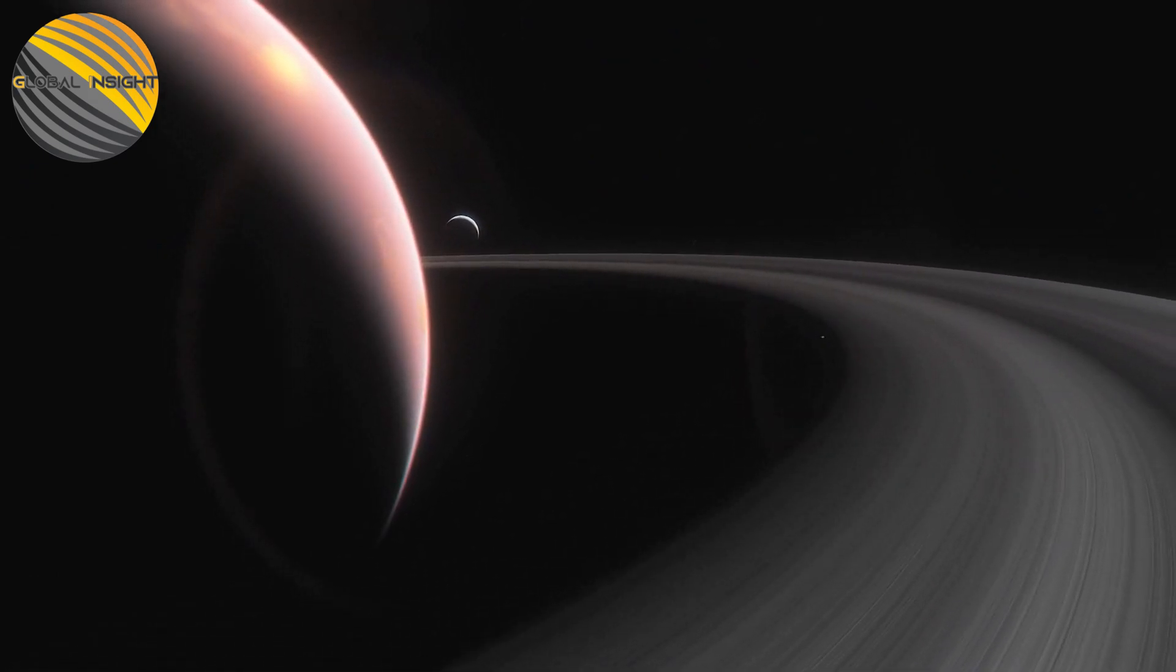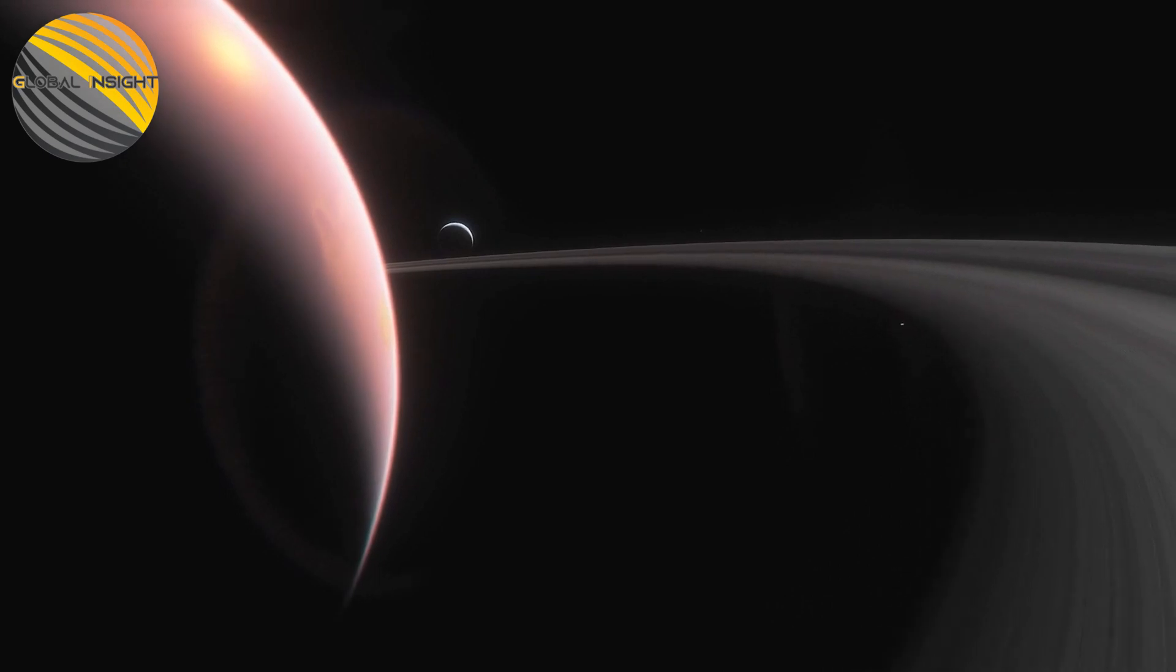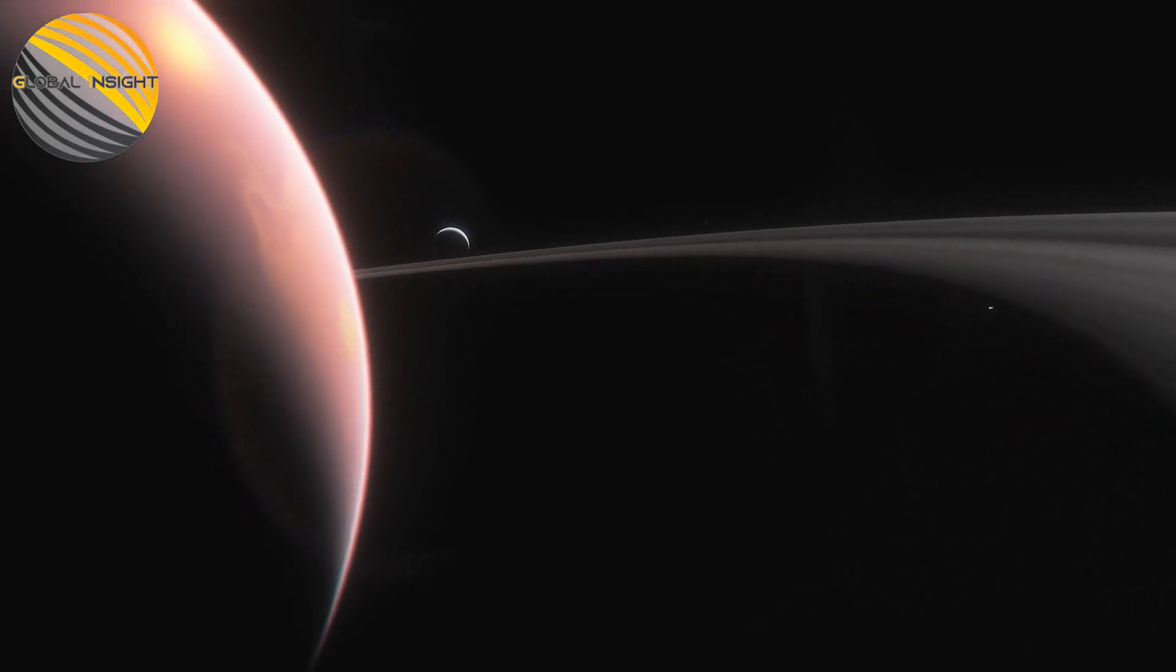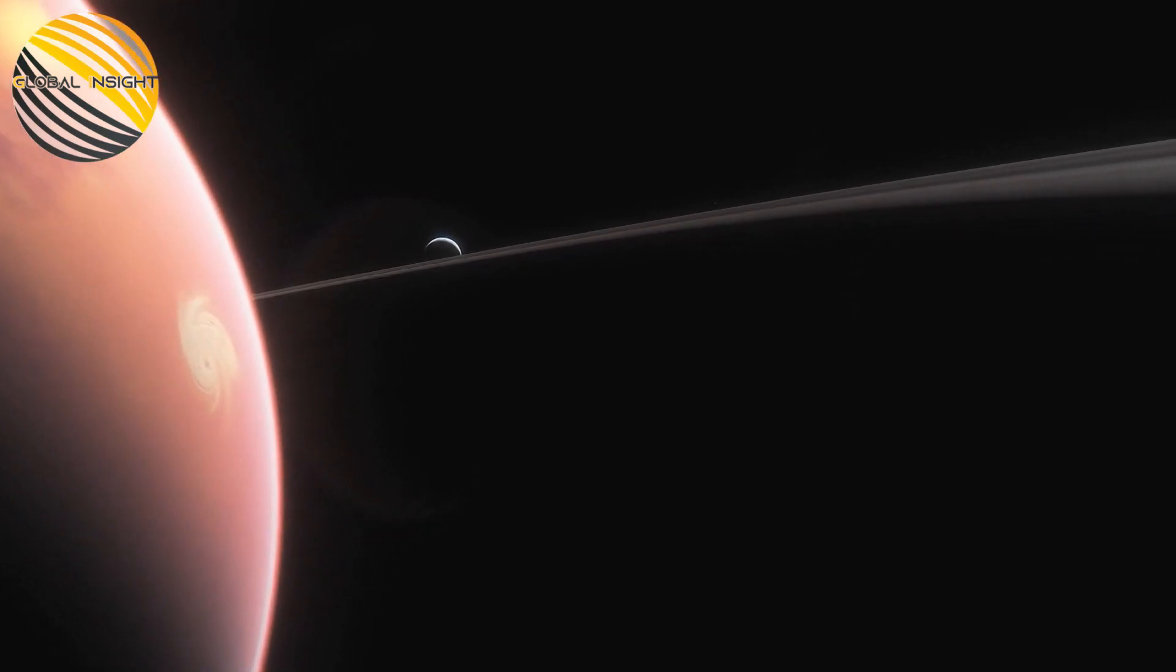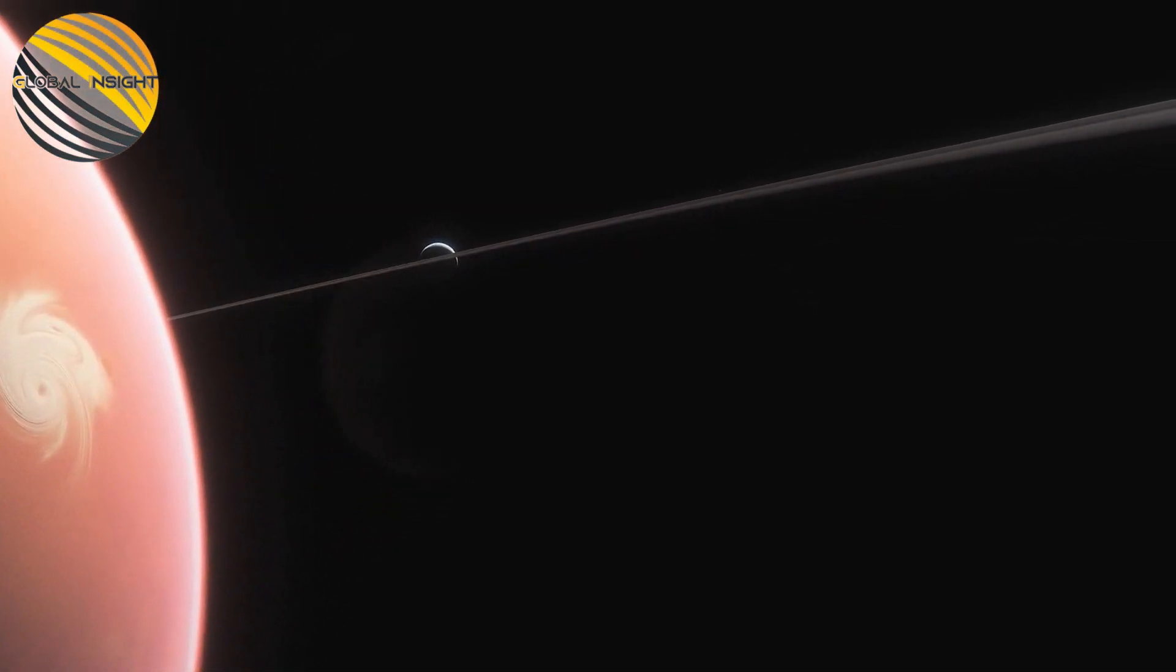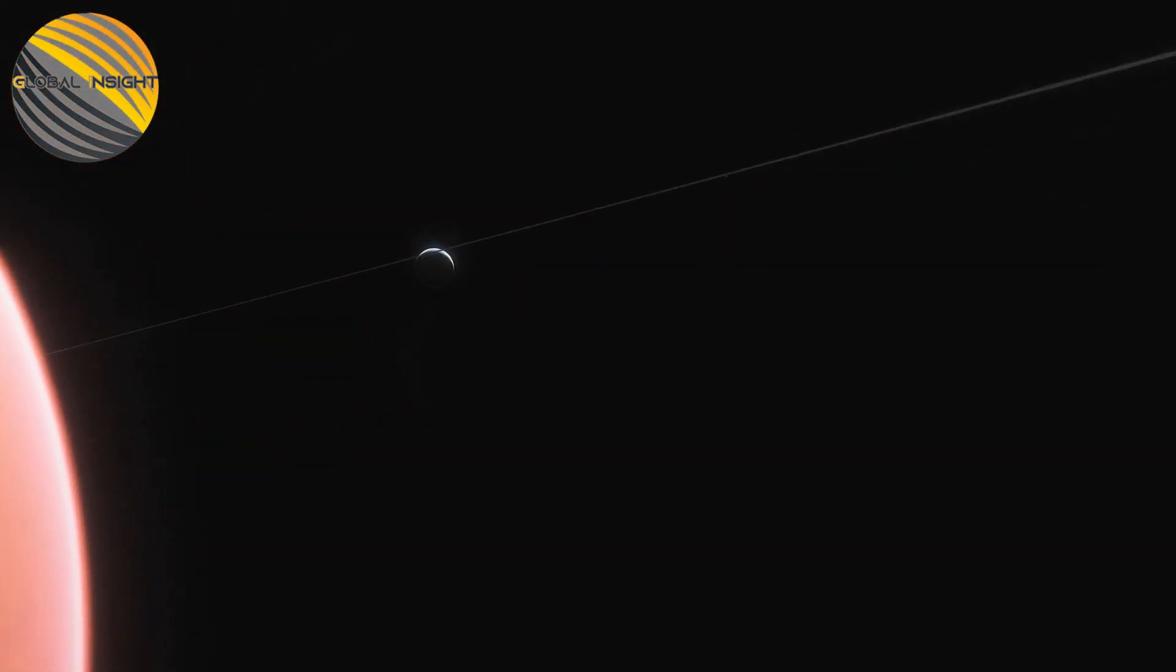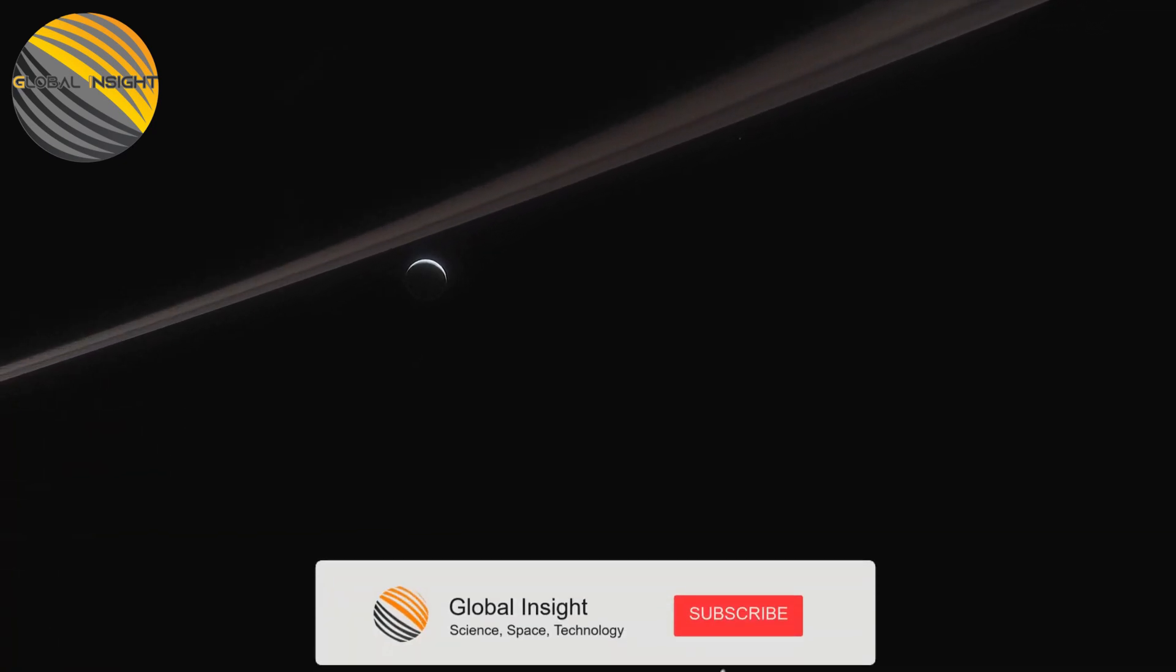The trajectories of all near-Earth objects up to the end of the century have been estimated by NASA. According to NASA, there is no known threat to Earth from an apocalyptic asteroid collision for at least the next 100 years. However, this does not mean that astronomers should stop looking.